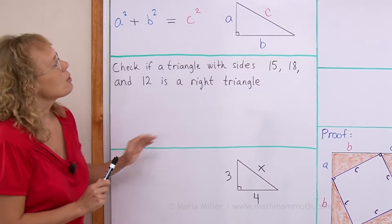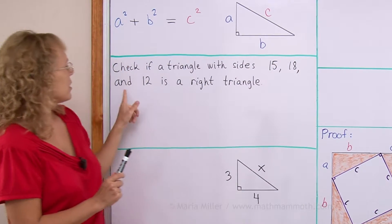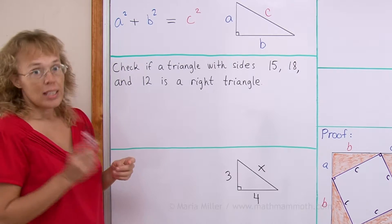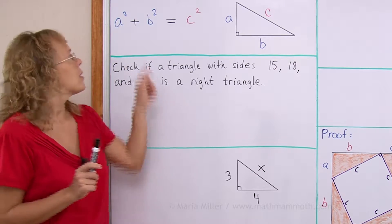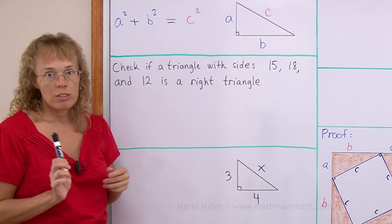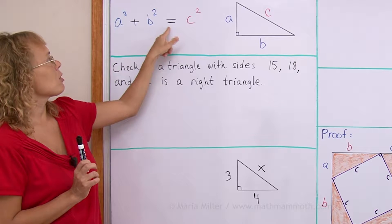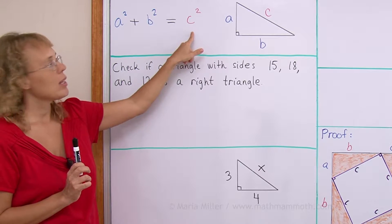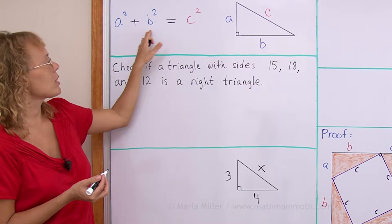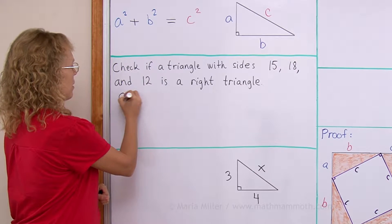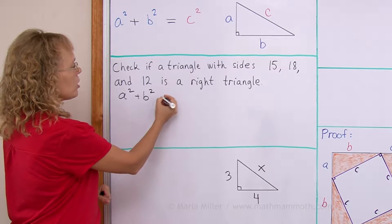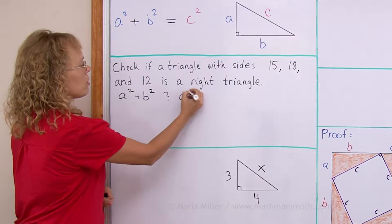Check if a triangle with side lengths 15, 18, and 12 units is a right triangle. If it is a right triangle, then a squared plus b squared equals c squared. But if it is not a right triangle, then a squared plus b squared will not equal c squared. So I will write a squared plus b squared and check if it equals c squared.